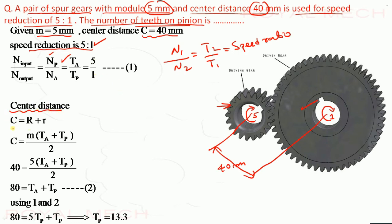Now center distance C equal to R plus r. That is radius of big gear capital R plus small gear, that is small r. So C equal to R plus r. And C equal to M into Tg plus Tp by 2. So we know D equal to M into number of teeth. So for radius R equal to M into number of teeth divided by 2. Because diameter by 2 is radius. Therefore Mt by 2. So we write C equal to M into Tg plus Tp by 2. So C is given already. That is 40. M is 5. And Tg plus Tp by 2. So we can write 80 equal to Tg plus Tp. This is number 2. Equation number 2.